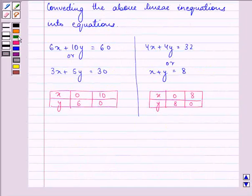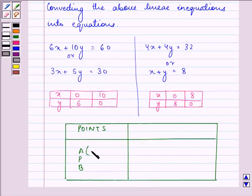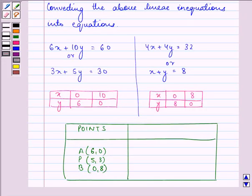Let us make a table. Points A, P and B are the three points that we are dealing with. This point A has the coordinates as 0, 8. Sorry, point A is 0, 6, P has 5, 3 and B is 10, 0. Actually, it was 6 and here it is 8.